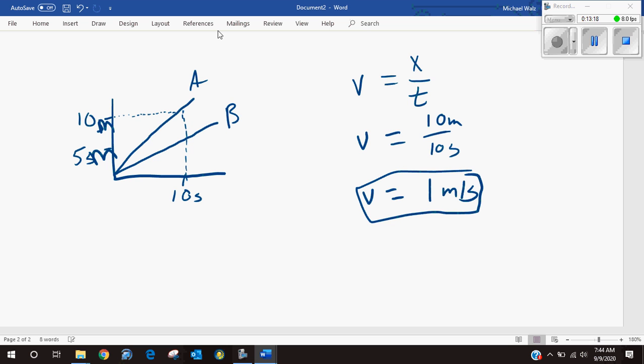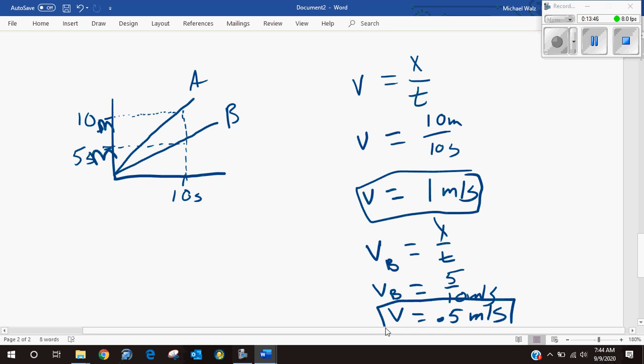And then the velocity for B would be starting with the same formula. In this case you can see that it's going half the distance in the same amount of time, so hopefully it makes sense that it's half the velocity.